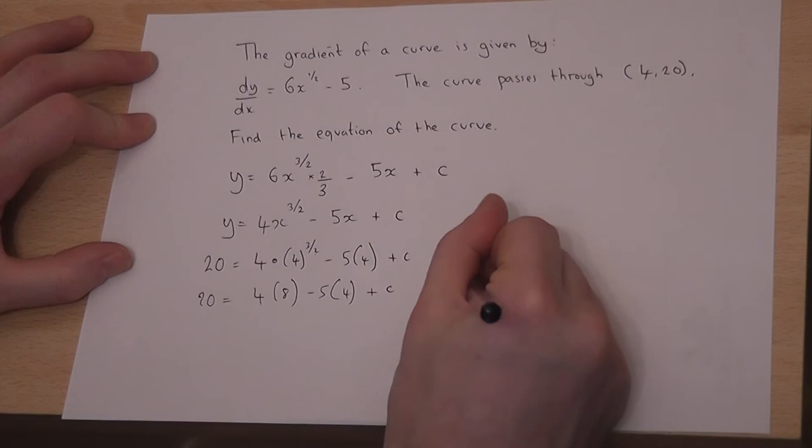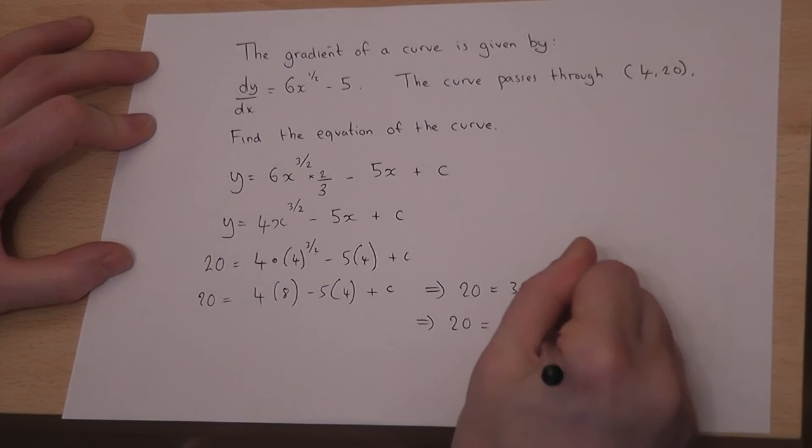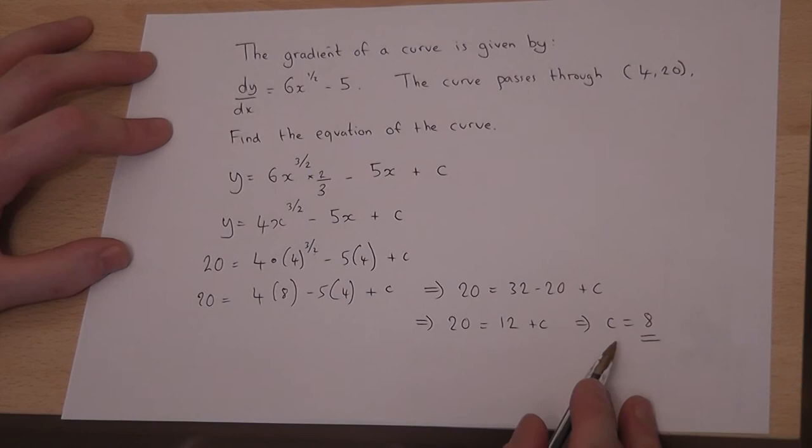Which tells us that 20 must equal 32 take 20 plus c. So therefore 20 equals, that becomes 12, plus c. Therefore c must equal 8 to make the equation hold.